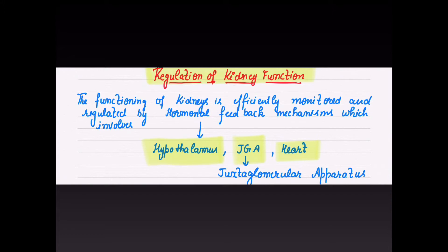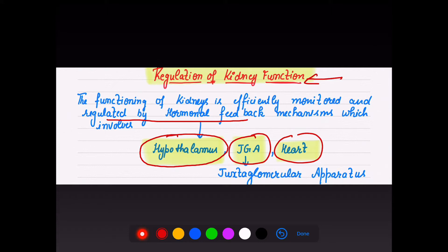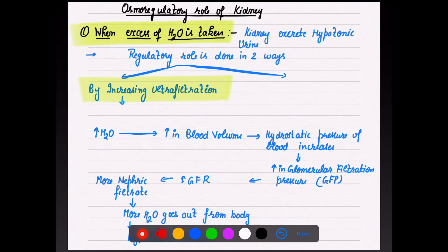The kidney's function is efficiently regulated by hormones. Hormonal feedback mechanism is very important to regulate kidney function. This involves the hypothalamus, JGA (juxtaglomerular apparatus), and to a certain extent the heart. These three play a very important role in maintaining osmoregulation and maintaining osmolarity in the kidney.